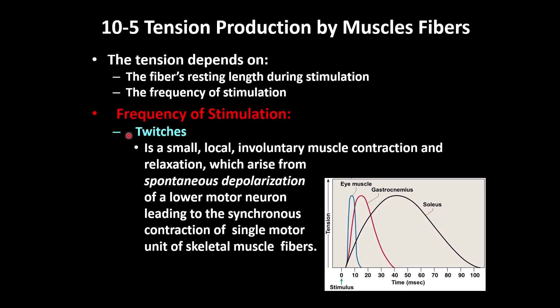The first type is called twitches. Twitches happen only once — they are spontaneous and involuntary. They occur locally at the lower motor neuron, meaning a spinal nerve or cranial nerve outside the central nervous system. One motor unit contracts — that is a few muscle fibers — and then relaxes. The duration depends on how many muscle fibers are activated.